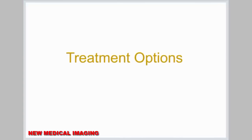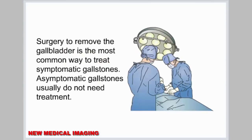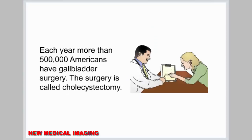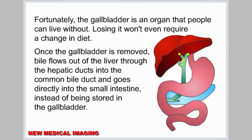Treatment options. Surgery to remove the gallbladder is the most common way to treat symptomatic gallstones. Asymptomatic gallstones usually do not need treatment. Each year, more than 500,000 Americans have gallbladder surgery. The surgery is called cholecystectomy. Fortunately, the gallbladder is an organ that people can live without — losing it won't even require a change in diet. Once the gallbladder is removed, bile flows out of the liver through the hepatic ducts into the common bile duct and goes directly into the small intestine, instead of being stored in the gallbladder.